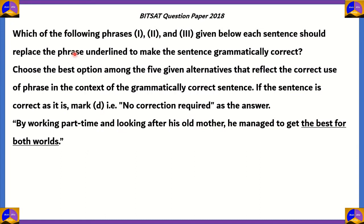Here is our first question: which of the following phrases — one, two, and three — given below each sentence should replace the underlined phrase to make the sentence grammatically correct? Choose the best option among the given alternatives that reflect the correct use of the phrase in context. If the sentence is correct as it is, you can mark D — no correction required — as the answer. The statement here is: 'By working part-time and looking after his old mother, he managed to get the best for both worlds.'